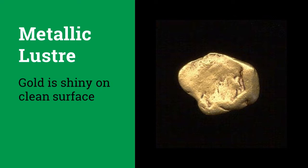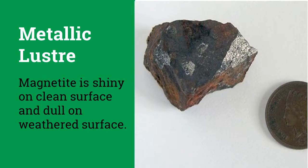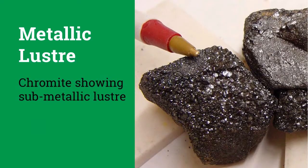Starting off with metallic lustre, it is the lustre of a polished metal surface. There are many examples of metallic lustre and unsurprisingly, most metals like gold have this lustre. Galena also has a real metallic lustre and its every fresh face looks like a mirror. Yet another mineral with metallic lustre is magnetite, whose clean faces are shiny but the weathered faces are dulled due to chemical action. Chromite shows submetallic lustre, which means it has an intermediate metallic lustre.